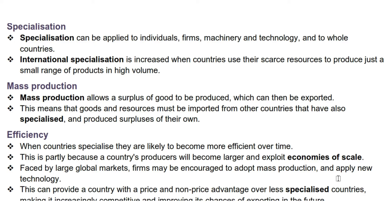Up next is mass production. Mass production allows a surplus of goods to be produced, which can then be exported. This means that goods and resources must be imported from other countries that have also specialized and produced surpluses of their own.